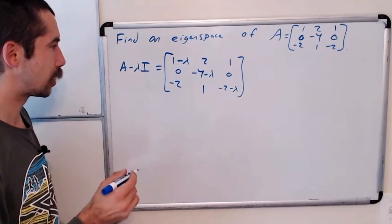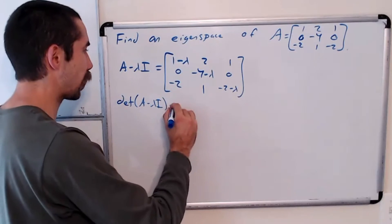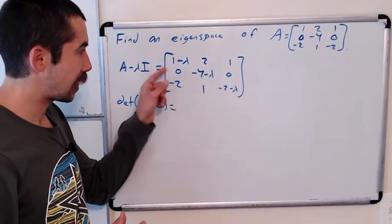To find the determinant, let's do the cofactor expansion along this second row.